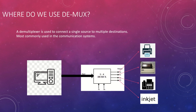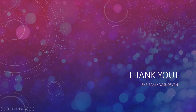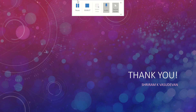Where do we use a demultiplexer? A simple example: connect a single computer to multiple destinations — a laser printer, dot matrix printer, fax machine, or inkjet printer — using a 1-to-4 DMUX with select lines to choose the output. That's all there is to it. If you like the content and the channel, please give a thumbs up and subscribe. Thank you very much.